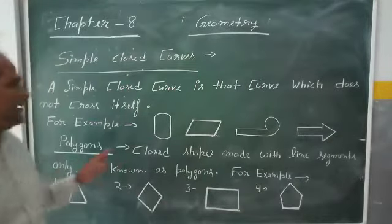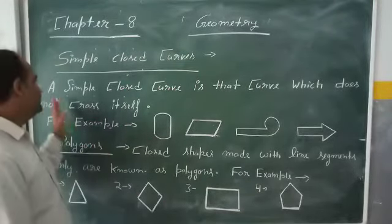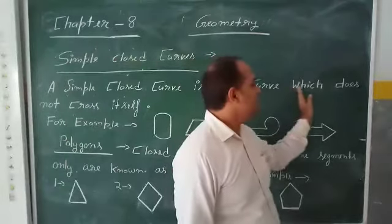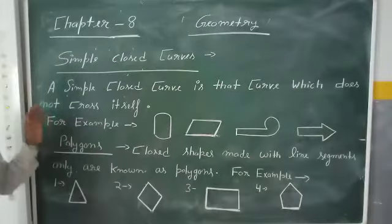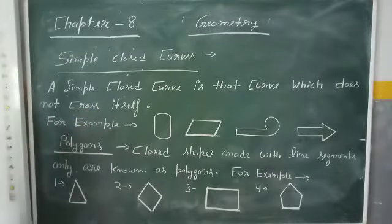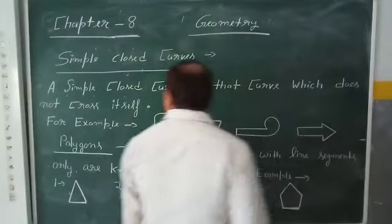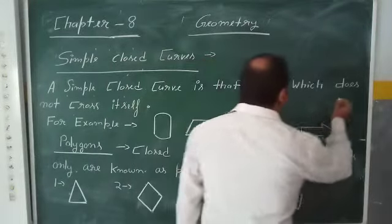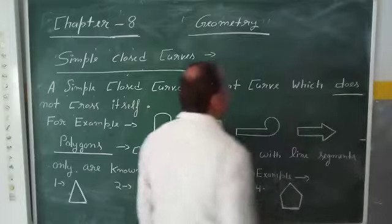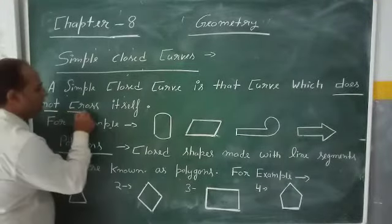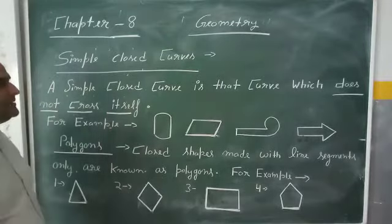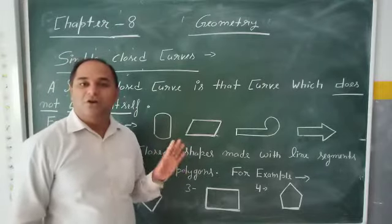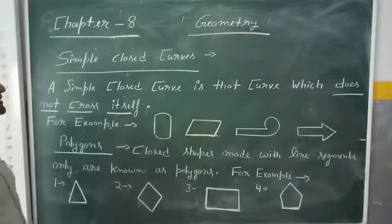We will understand by definition. The definition is: a simple closed curve is that curve which does not cross itself. Focus on it — a simple closed curve is that curve which does not cross itself, and this curve is a closed curve.